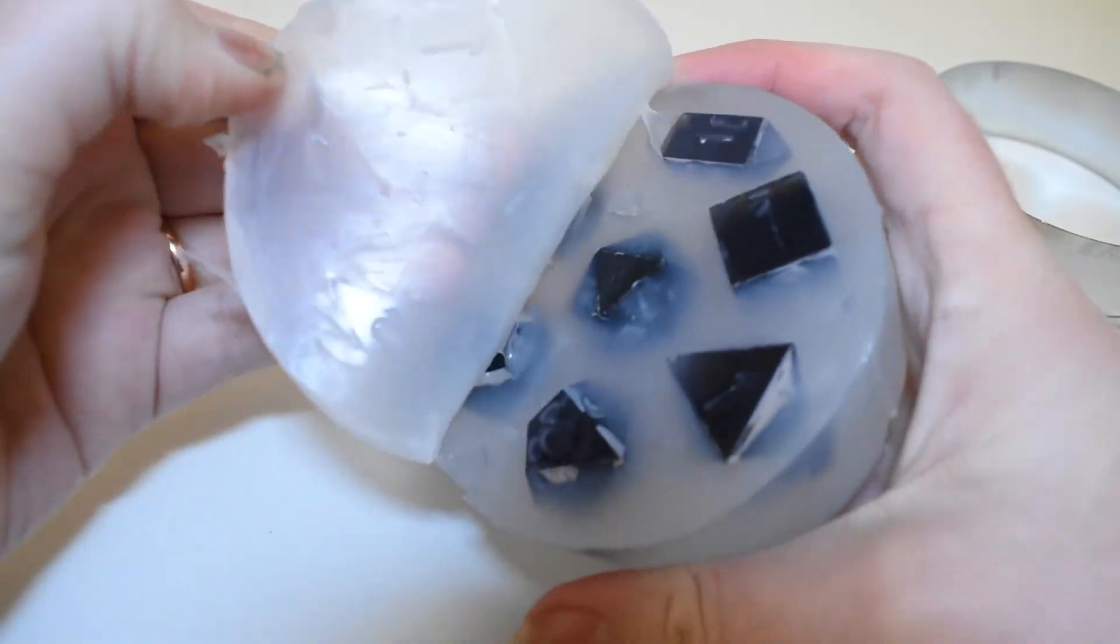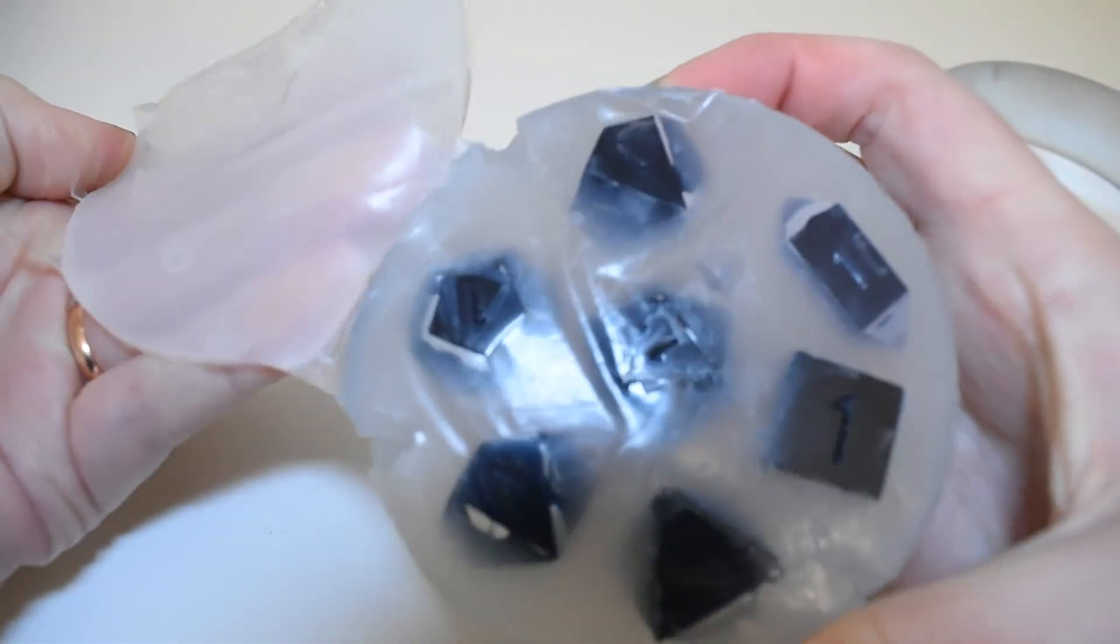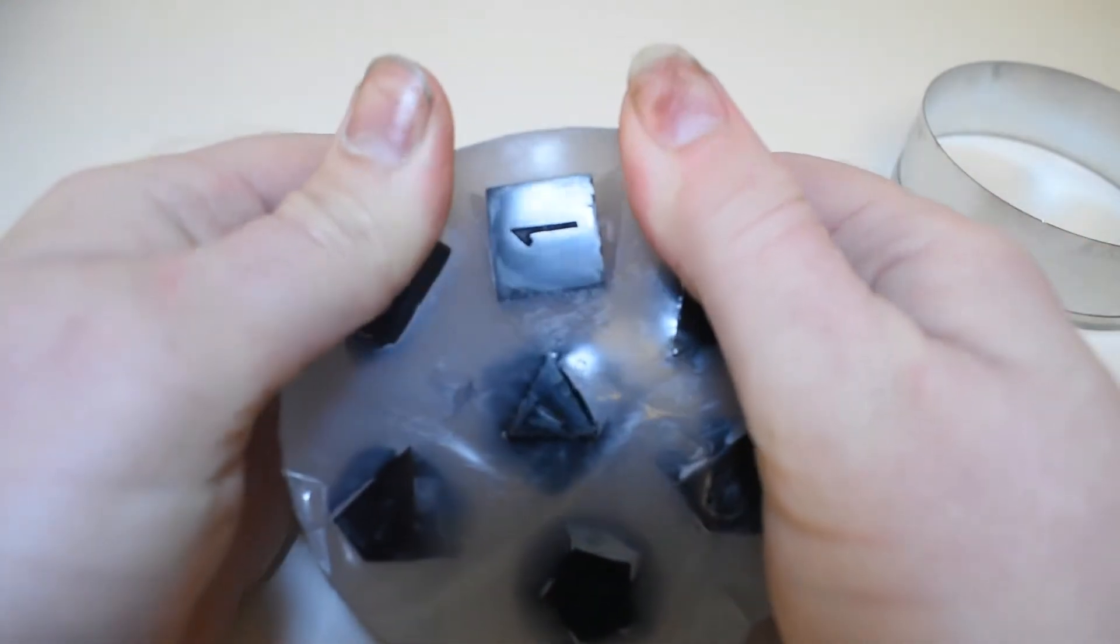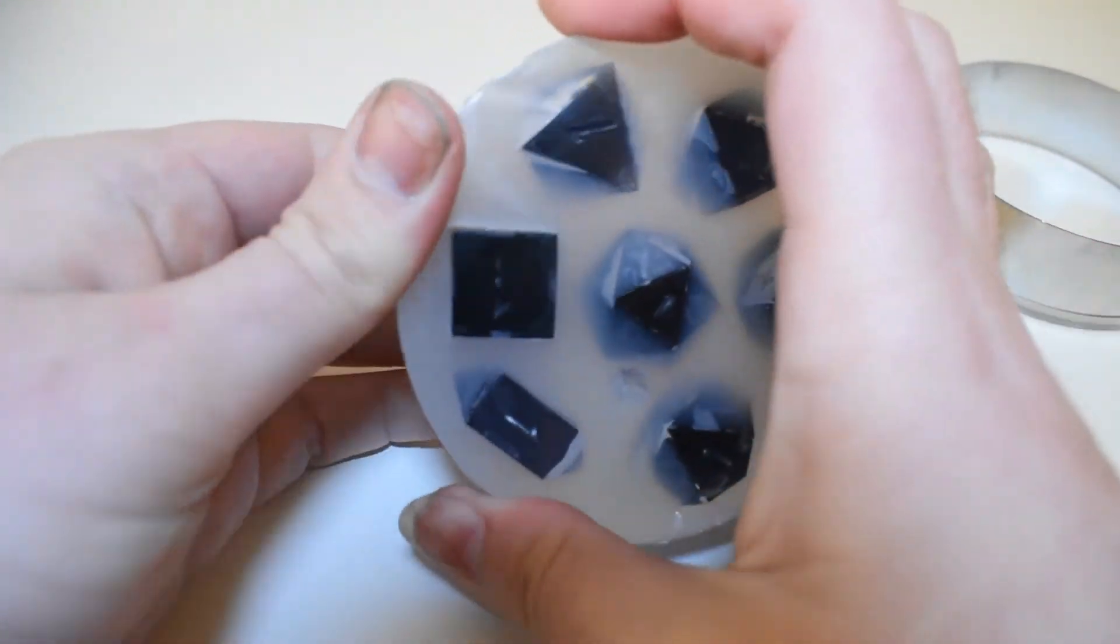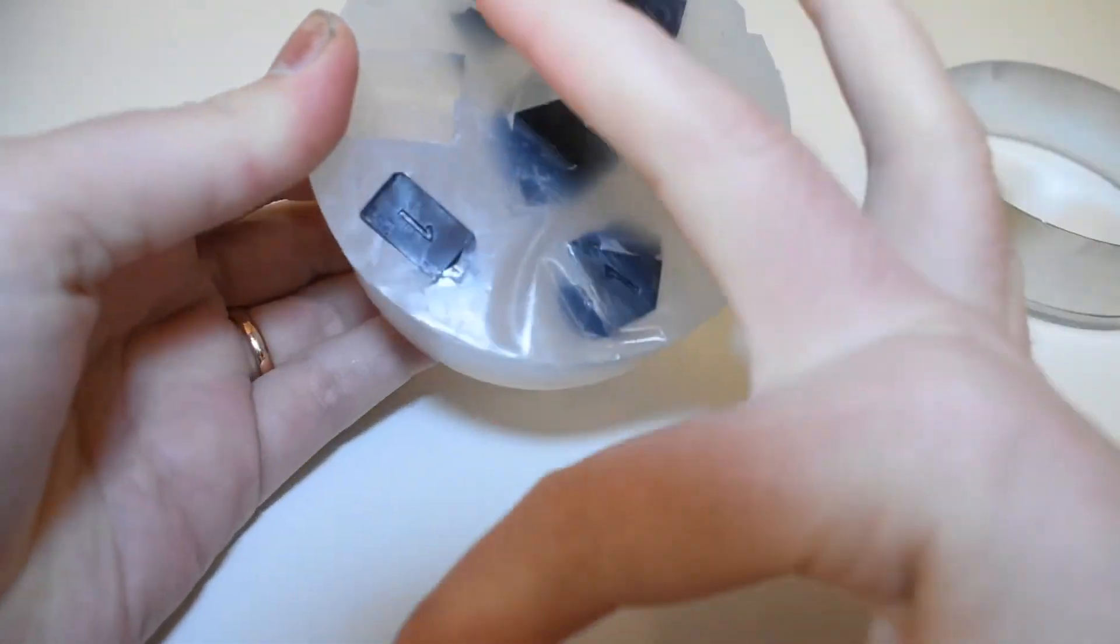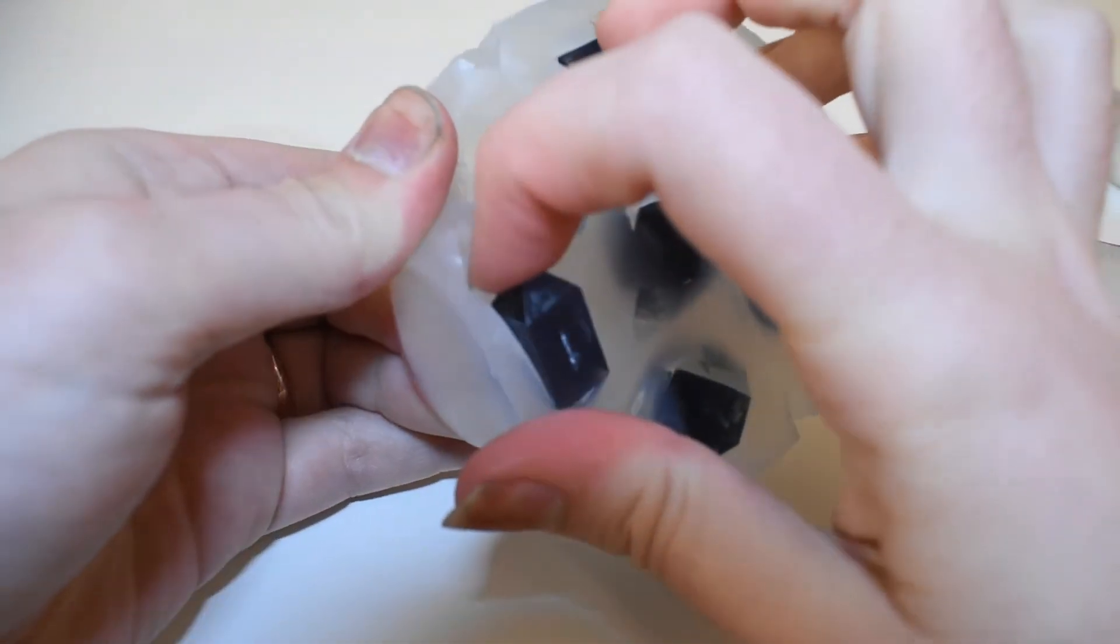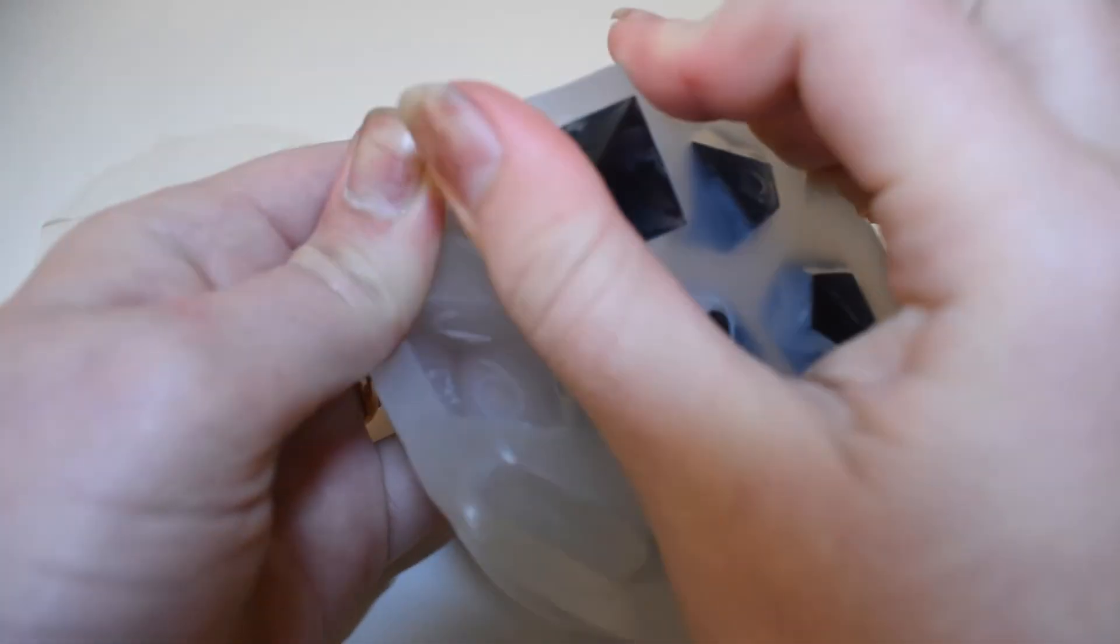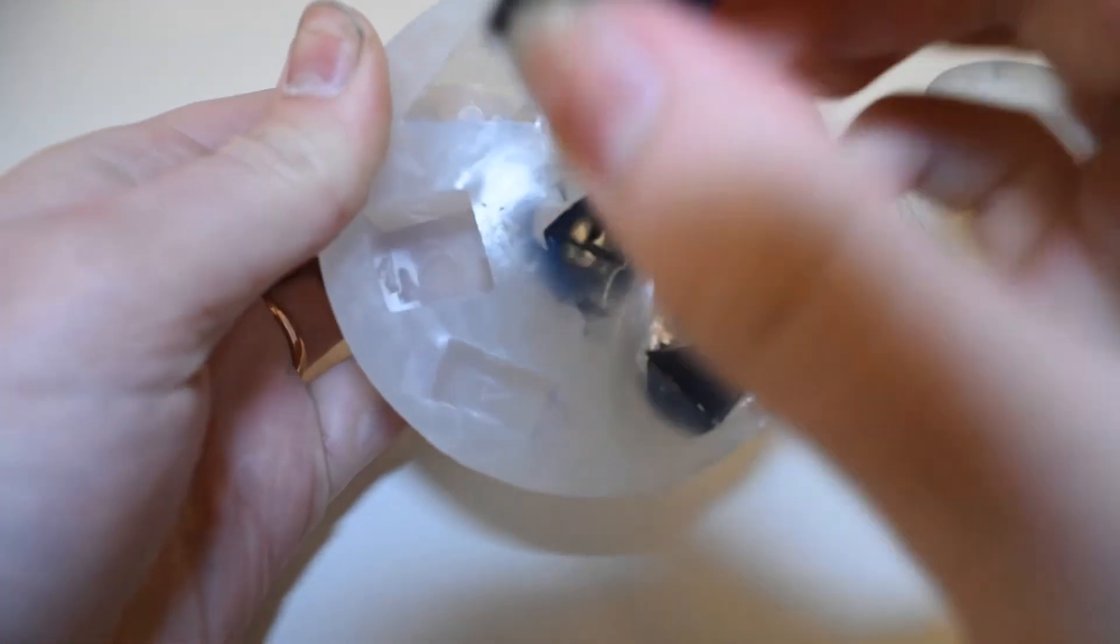This is just super easy. You can see how easy it was to peel the lid off because of the petroleum jelly. I only had that one little edge that wanted to stick a little bit. And then you demold your masters and you're done.